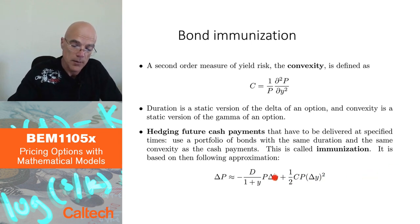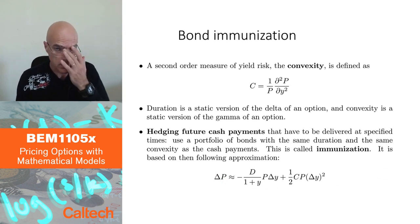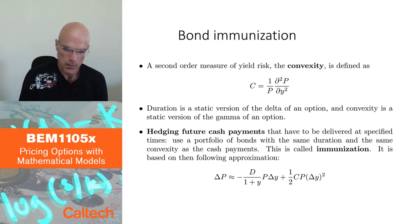So if you can keep your duration close to zero and your convexity close to zero, then the value of your portfolio is likely not to change very much. And if that's what you want, if you want a stable portfolio, you are a pension fund, you are an insurance company, if that's what you want, then that's what you do. So you keep your duration and your convexity of the whole portfolio small.